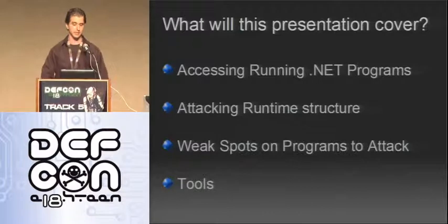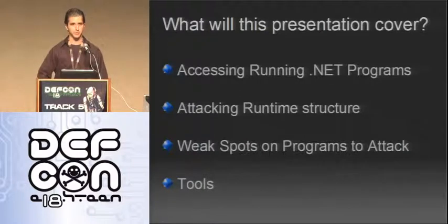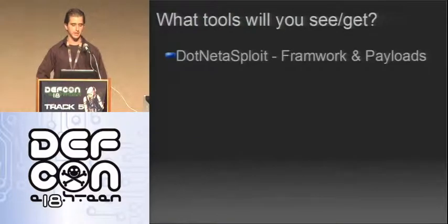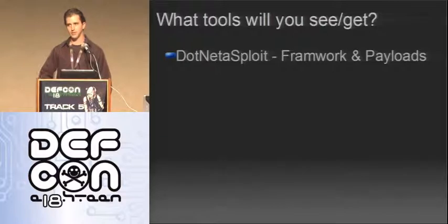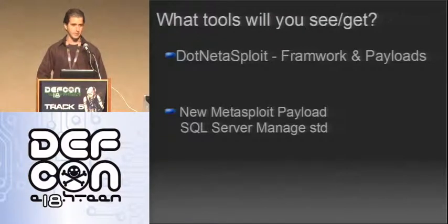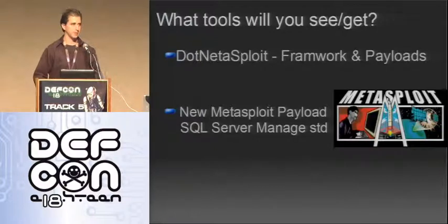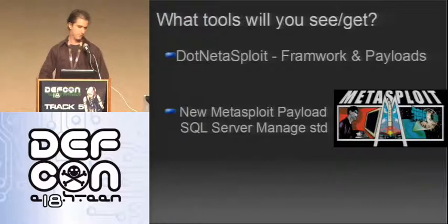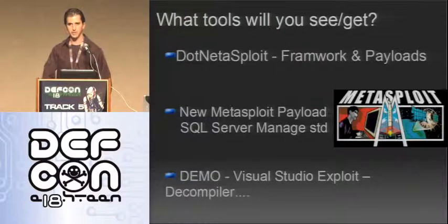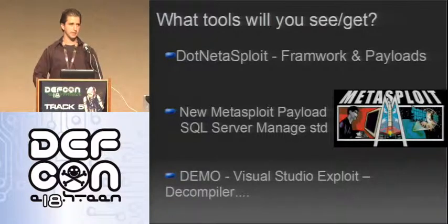This presentation covers accessing running .NET programs, attacking the runtime structure, the weak points to go after when you attack a program, and some tools we're going to be releasing. The tools include DotNetExploit — a framework and payload system with a management area, standard delivery packages, and payloads that are easy to reuse. There's also a Metasploit payload that will work with the delivery system for arbitrary delivery. We'll also be demoing a Visual Studio exploit and showing decompilation techniques that get around some protections you might encounter when decompiling .NET applications.